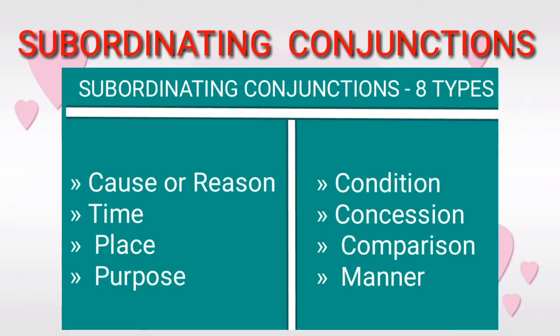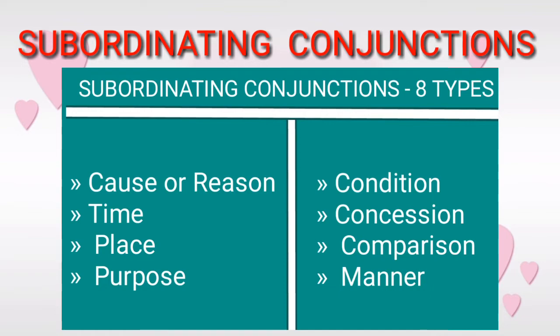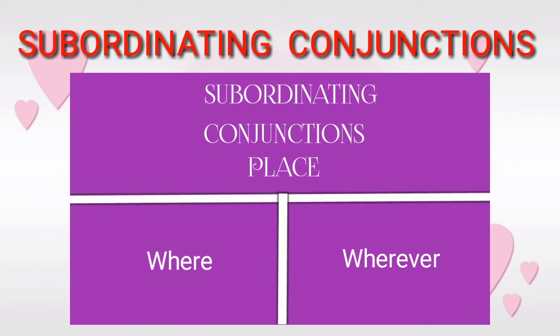Let us recollect the subordinating conjunctions from the box given. We previously talked about subordinating conjunctions of cause or reason, and time. Today we will get into subordinating conjunctions of place, purpose, and condition. Look at the box given and find what are the subordinating conjunctions of place. 'Where' and 'wherever' are the subordinating conjunctions of place. We will discuss each one separately with examples.